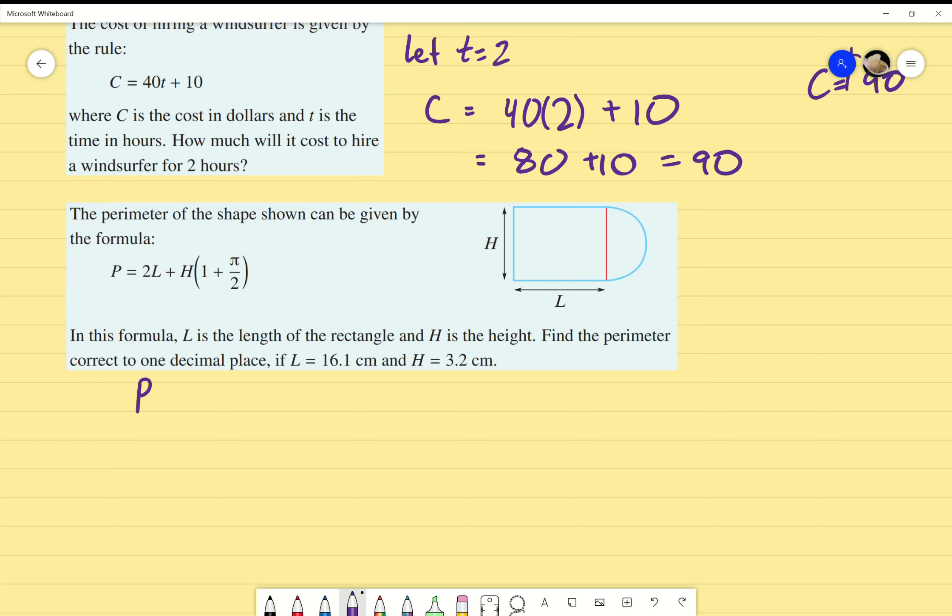So, P equals 2. And instead of writing L, I'm going to write 16.1. Once again, you can multiply if you want. I'm just going to put brackets there. Plus H, which is 3.2. Times by 1 plus pi over 2. Any questions about that?